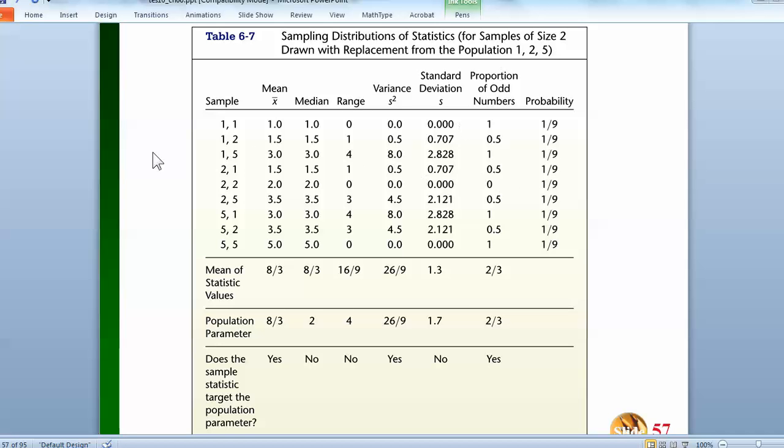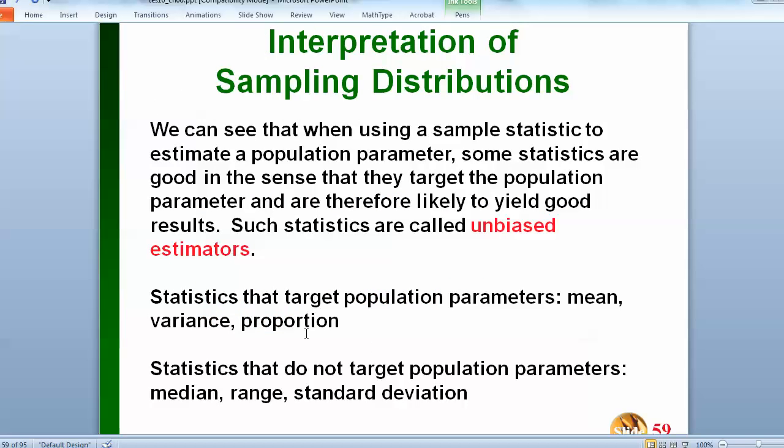Those are just the samples listed. They had six probability distributions where each one has a 1 ninth probability, but then since there's repeats, you can make a condensed distribution. And then they find the mean from each of those probability distributions, and then they have the population parameter, if you would have actually gone to the original population data and calculated out the parameters. And you'll see which ones target, and which ones do not. So we're just emphasizing again which ones are biased and which ones are unbiased.